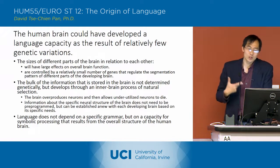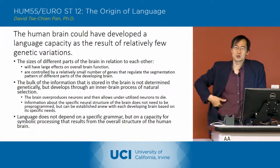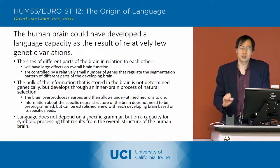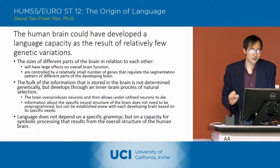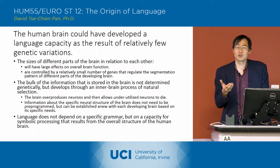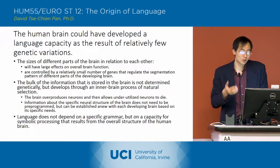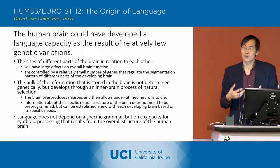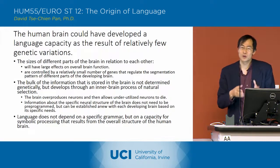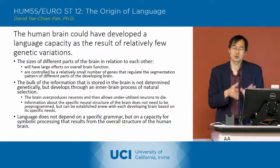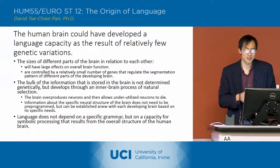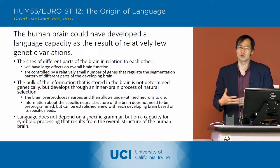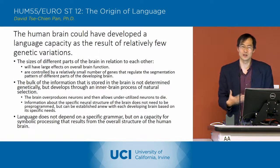What he's indicating overall is that the human brain could have developed this language capacity as a result of relatively few genetic variations. The size of the different parts of the brain in relationship to each other has a large effect on brain function, but they're controlled by a relatively few number of genes that regulate the segmentation pattern of different parts of the brain in development.